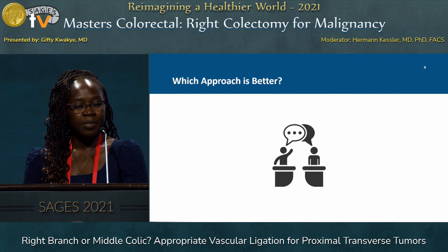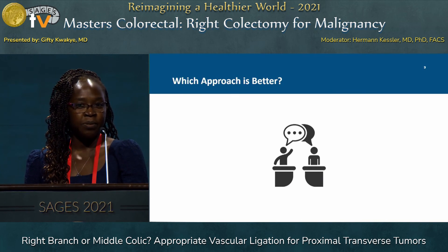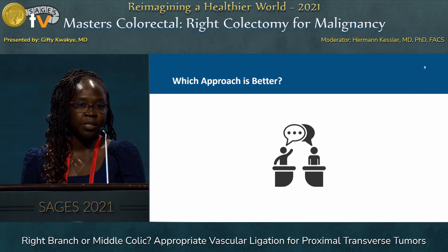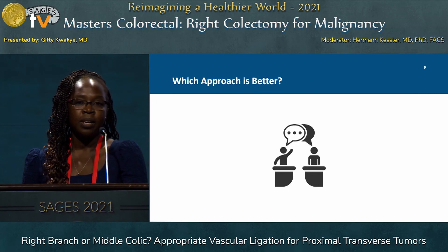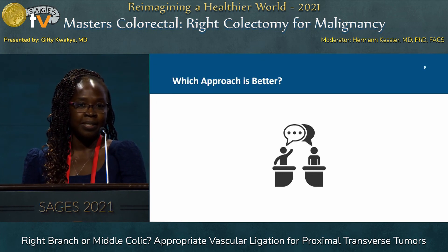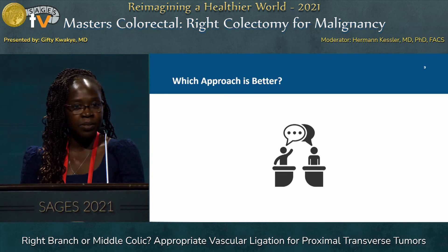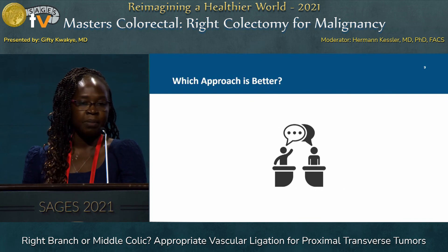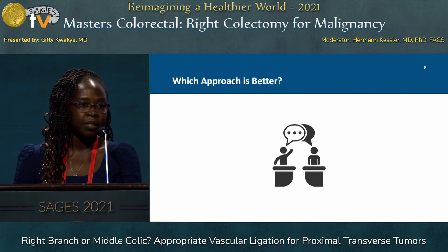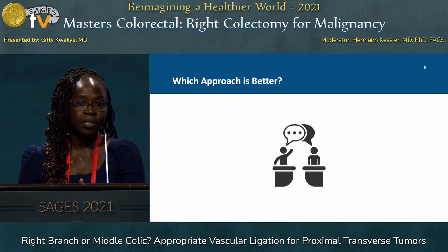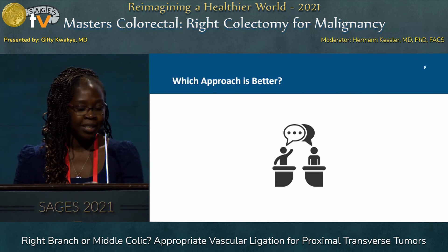We're going to spend a lot of time today discussing which approach is better. For most of you in this room, you typically would do the conventional D2 and get your 12 lymph nodes, because that is what the NCCN guidelines specify as ideal. But there are definite benefits to the CME and benefits to the D3, which other panelists will discuss. Thank you for your attention.